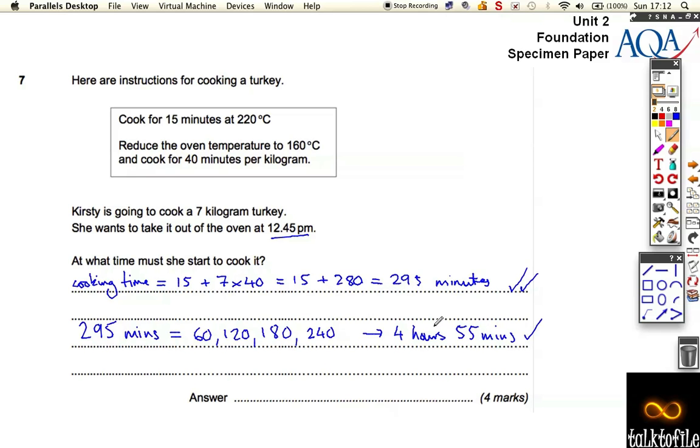We just need to count back 4 hours and 55 minutes from 12:45. If we count back 55 minutes, 45 takes us to 12:00, and 10 more takes us to 11:50. Then count back 4 hours: 10:50, 9:50, 8:50, 7:50 - that's 1, 2, 3, 4 hours. So it's got to go in at 07:50 AM.